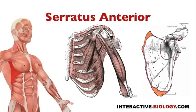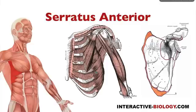This is serratus anterior and we need to know the origins, the insertions, and the actions of that muscle. When it comes to the origins, you can see it more clearly in this picture. The origins would be the external surface — the outside surface — of ribs 1 through 8. Sometimes you also see it on the 9th rib, depending on the individual. But in general, the external surfaces of ribs 1 through 8 or 9.